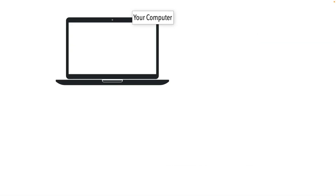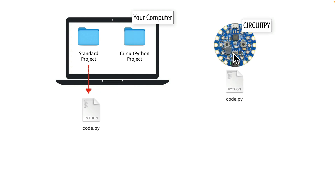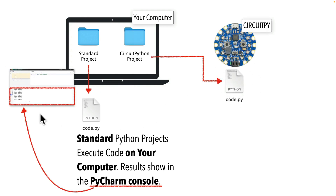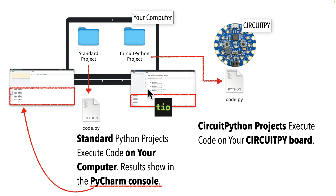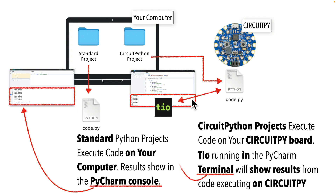Now we have another issue to deal with before we install PyCharm, and we only have to deal with this once. Normally when you run Python code in PyCharm, it runs on your computer. But with CircuitPython, we're running code on our CircuitPy board. PyCharm has a console area that shows results of executing programs, but that console only shows results of code that runs on your computer, not on the separate CircuitPy board. To overcome this, we'll install a program called TIO — that stands for Terminal IO — and run it from the terminal pane in PyCharm. TIO will connect to our CircuitPy board, show any output from the executing program, and report any runtime errors. We can even use TIO to run a REPL to execute code line by line, and we'll talk more about that in a future lesson.